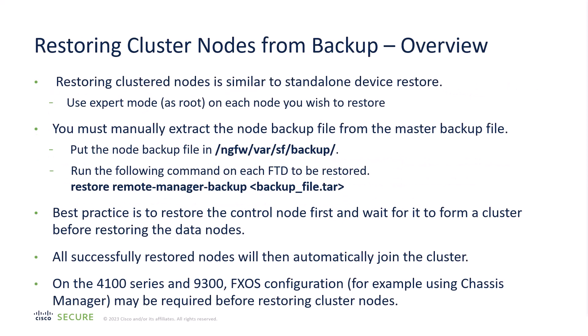As far as restoring, this is essentially identical to what you had before — you extract the appropriate tar file for the node you want to restore and restore it as you did before the 7.3 release. On the 4100 and 9300, there's also an FXOS configuration which is not part of this backup and has to be backed up and restored separately. With that, I conclude my presentation — thank you very much for your time.